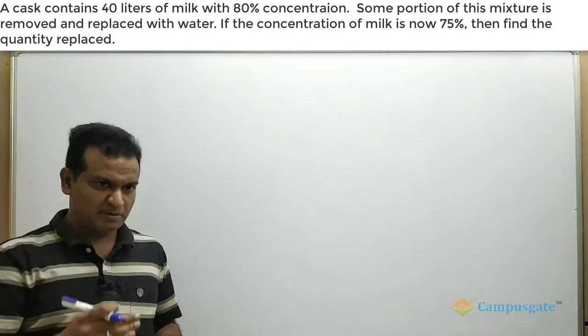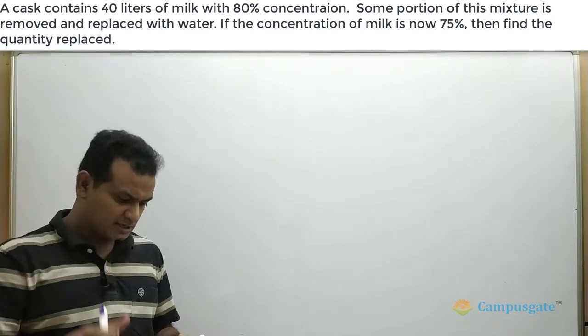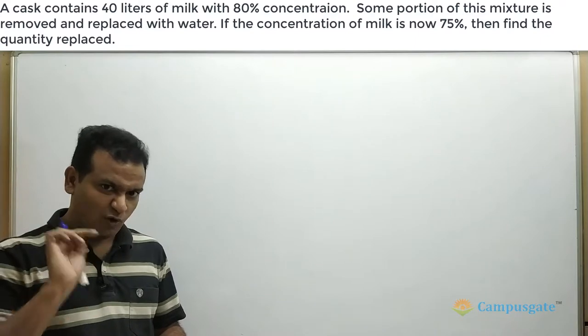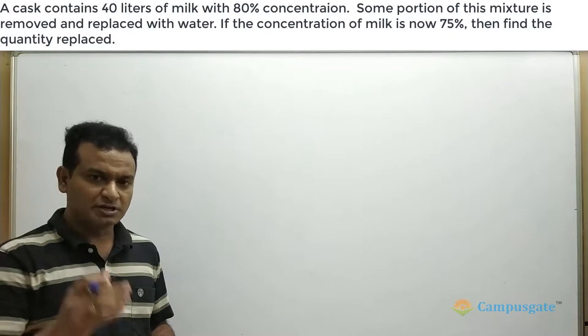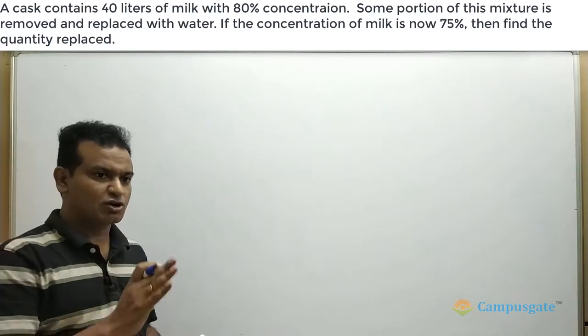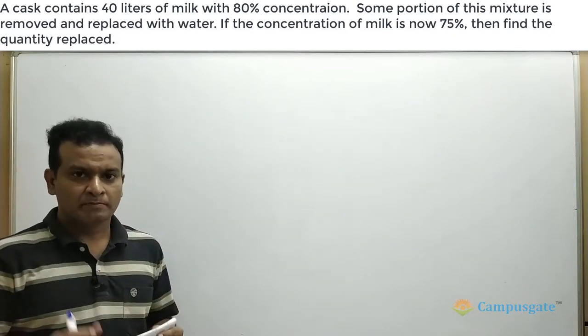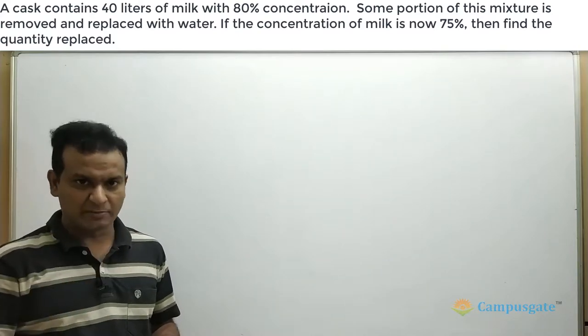That means whatever is being removed, the same quantity we are replacing, but we are replacing it with water, pure component, so that the proportion of milk drops from 80 percent to 75 percent. That means the initial concentration of the milk is 80 percent. Because we are adding water to it, the concentration changes to 75 percent.